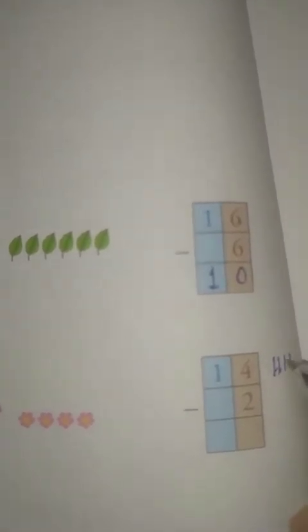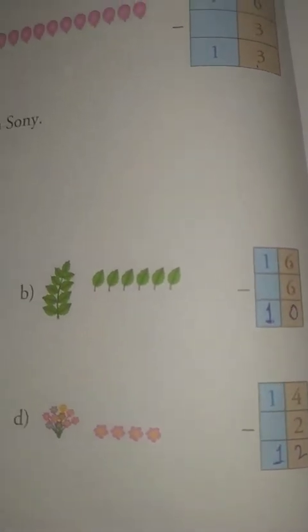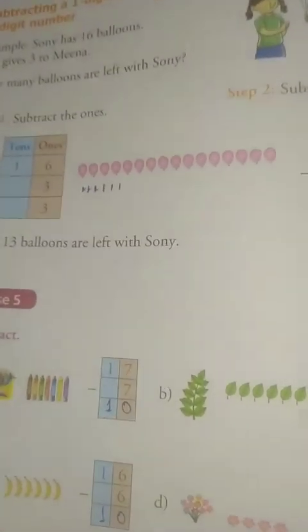Number D: 14 minus 2. So 4 minus 2 — count 2, 3, 4 and cut 1, 2 — how many left? 2 left. So 4 minus 2 is equal to 2, and 1 will come down. So 14 minus 2 is equal to 12. Have you understood? Thank you.